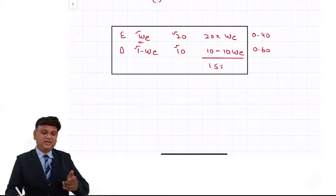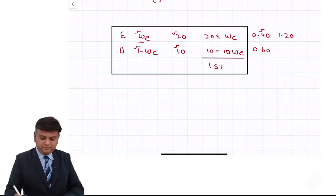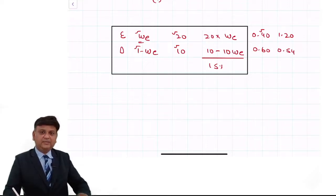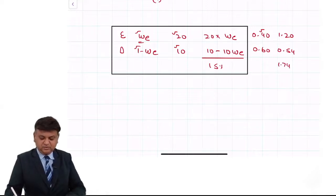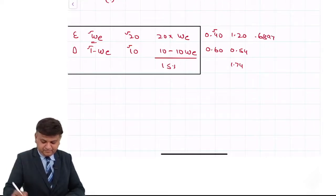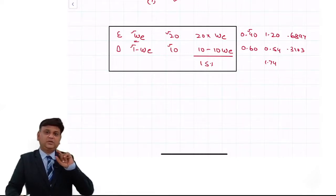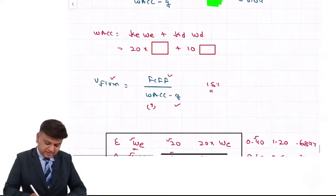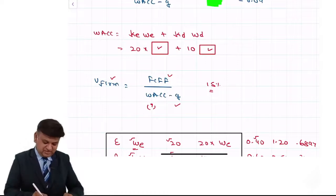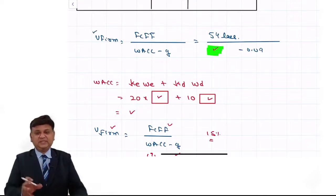Since the market value of equity is 3 times its book value: 0.40 × 3 = 1.2. Since the market value of debt is 9/10 of book value: 0.60 × 0.9 = 0.54. The total is 1.2 + 0.54 = 1.74. So market value weight of equity = 1.2 / 1.74 = 0.6897, and weight of debt = 0.3103. Then we compute the market value WACC and finally the correct value of the firm.